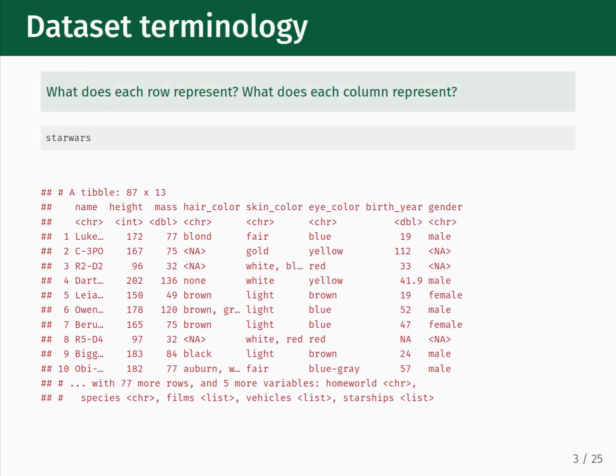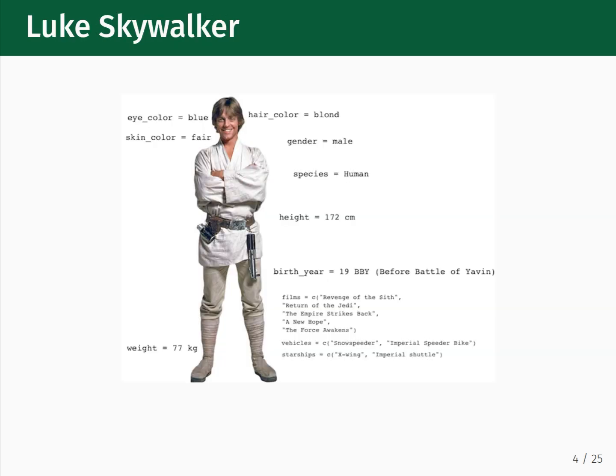Whenever you are provided with a new dataset, you should perform a preliminary inspection of the variables and observations. A simple question to start with is: what does each row represent, and what does each column represent? In this case, each row represents an individual character from the Star Wars universe, and the columns are their attributes. For example, the first row is Luke Skywalker, pictured here. The columns tell us information such as his eye and hair color, his species, his height and weight, and which of the movies he has appeared in.